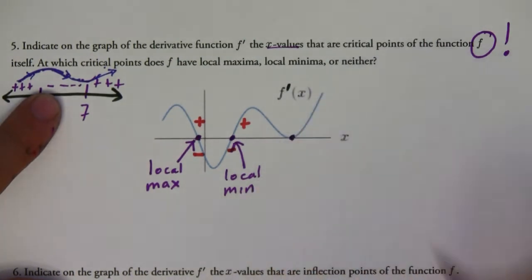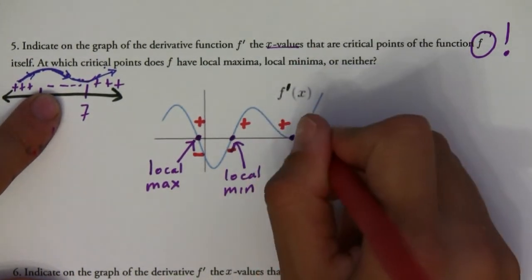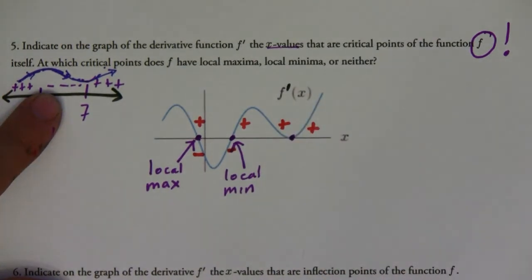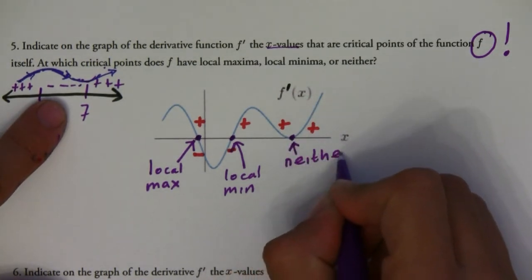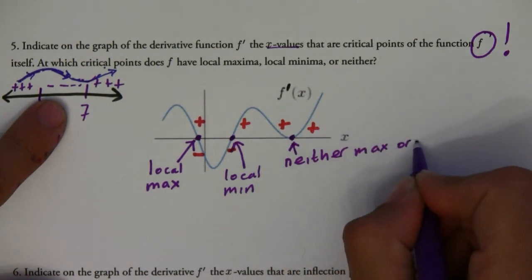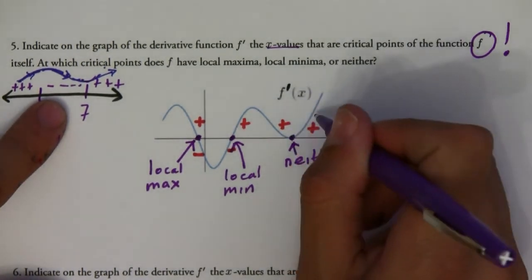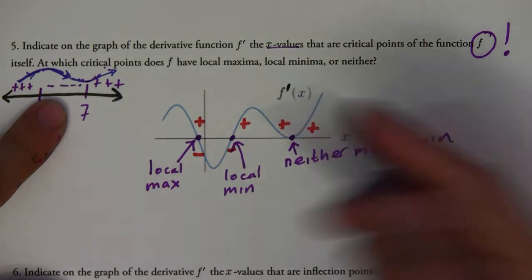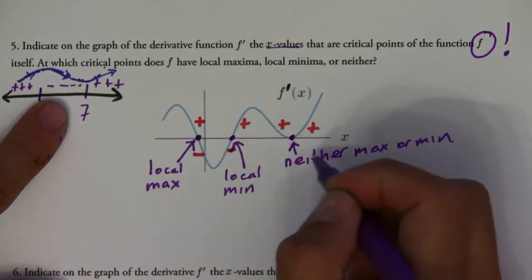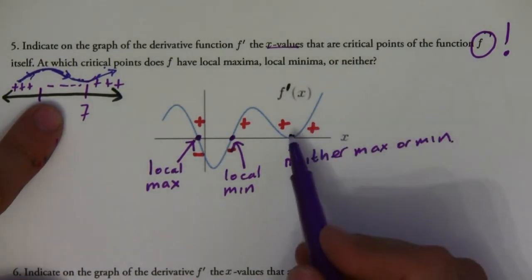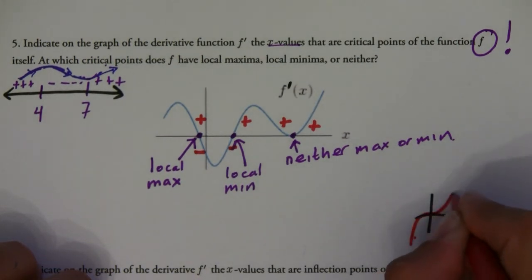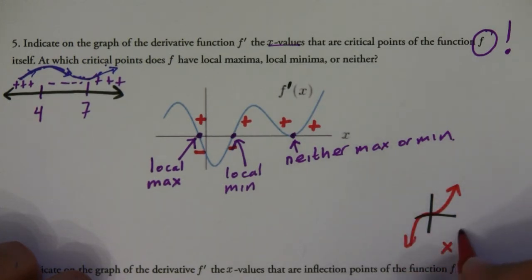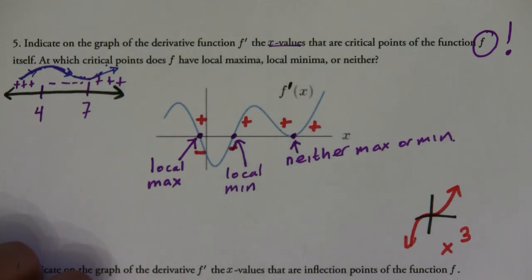What about this one? The derivative goes from positive to positive, which means the original function goes from increasing to increasing — this tells us it's neither a max nor a minimum. The derivative has to change sign to be a maximum or minimum, so this one is neither. This is like when your function is increasing, then has a flat spot, then is increasing again — for example, the function x³ has this characteristic.